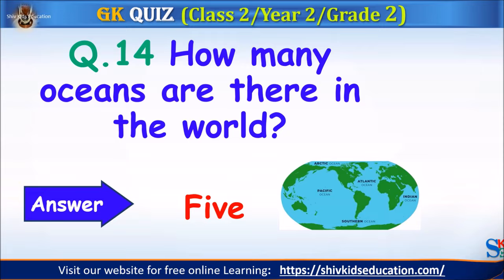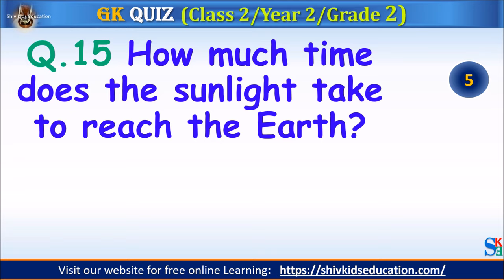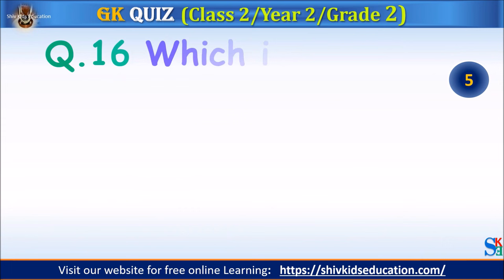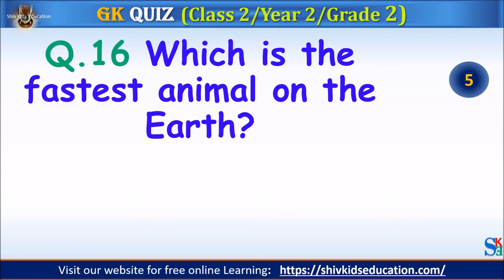Question 15: How much time does sunlight take to reach the Earth? Your time starts. The answer is 8 minutes and 20 seconds. Question 16: Which is the fastest animal on Earth? Your time starts. The answer is the peregrine falcon.